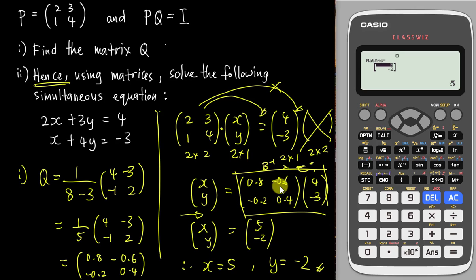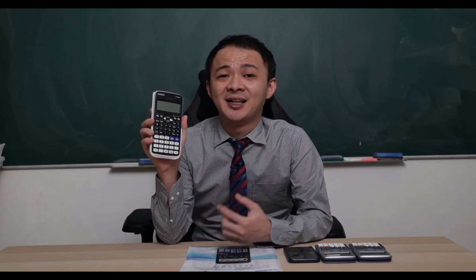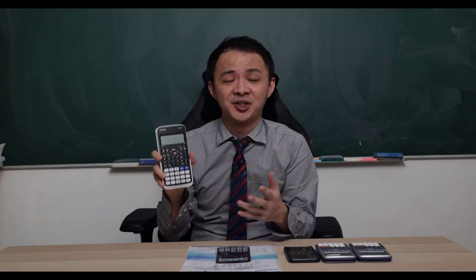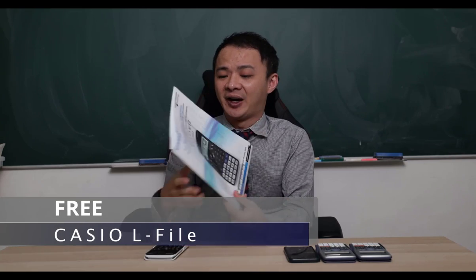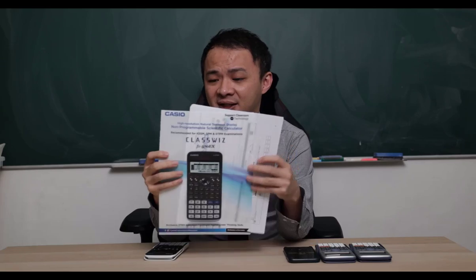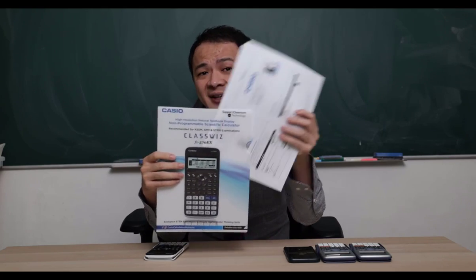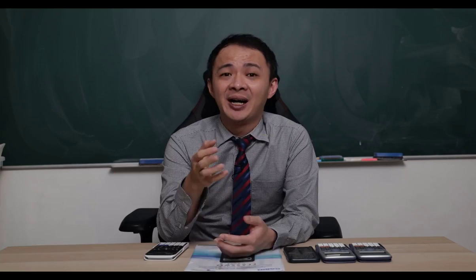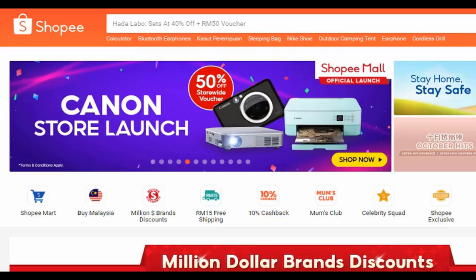For Paper 1 you can use the calculator directly, but for Paper 2 the working is mandatory. I hope you find this video helpful. If you're interested in getting this calculator, I'll share a Shopee link in the description below. The link goes to the Casio official store, where Casio Malaysia is currently offering a promotion — a free Casio L file with any purchase.